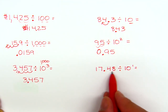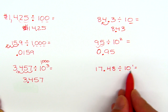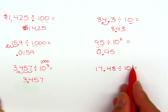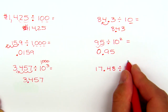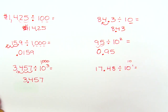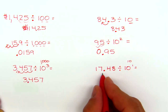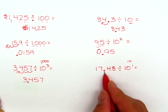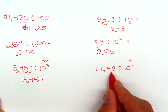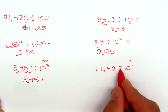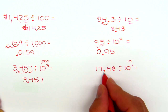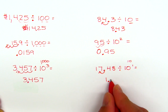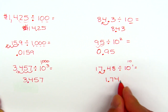In this last one: seventeen and forty-eight hundredths divided by ten to the first power, which is really just one ten — one zero. We're going to move the decimal one place. Which way? If we moved it to the right the number would get bigger, which doesn't make sense when dividing by a whole number, so we move it to the left. It's going to become one and seven hundred forty-eight thousandths.